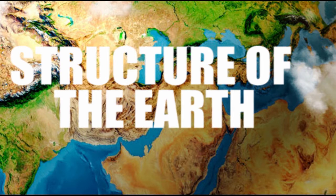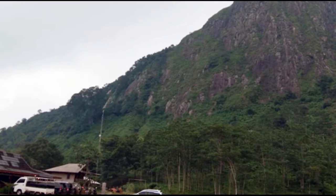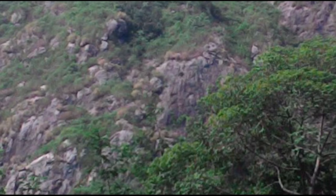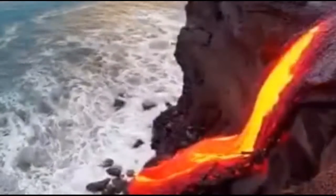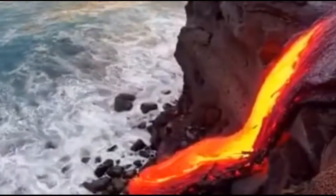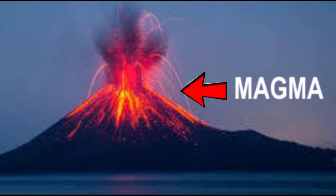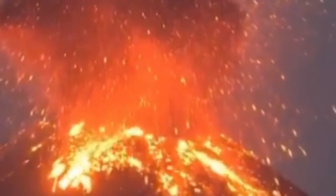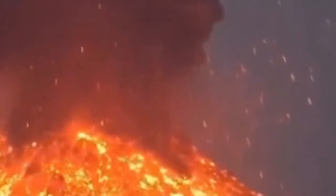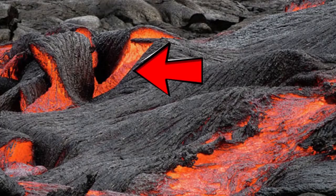Structure of earth and formation of rocks: rocks can be formed beneath or on the surface of the earth. Molten rock found below the surface of the earth is known as magma. When a volcano erupts, magma flows to the surface of the earth and is called lava.